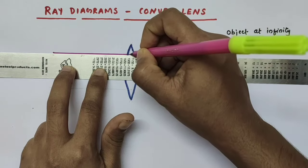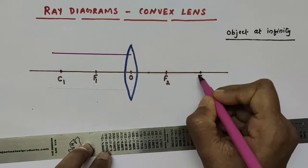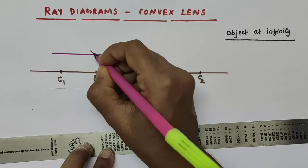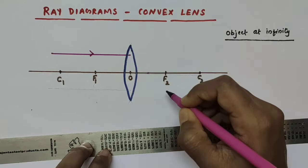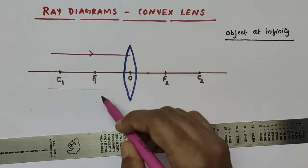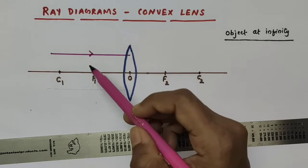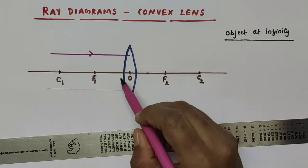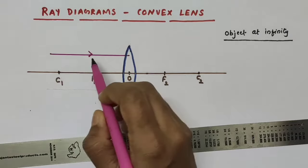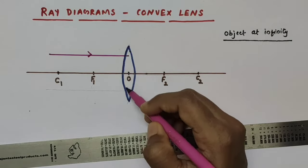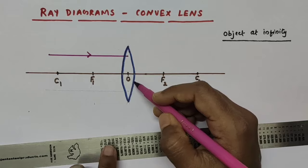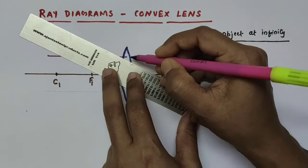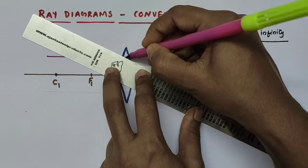Draw that ray of light till the middle portion of this convex lens. I extended the principal axis to the right side as well as to the left side, and drawn a straight line parallel to the principal axis till the midpoint of the convex lens. So this incident ray is parallel to the principal axis. A ray parallel to the principal axis, after refraction from a convex lens, passes through the principal focus on the other side. So after refraction, the refracted ray will pass through this principal focus on the other side.